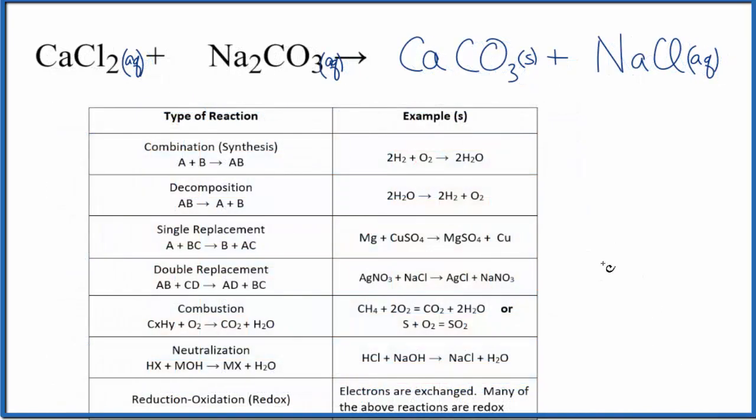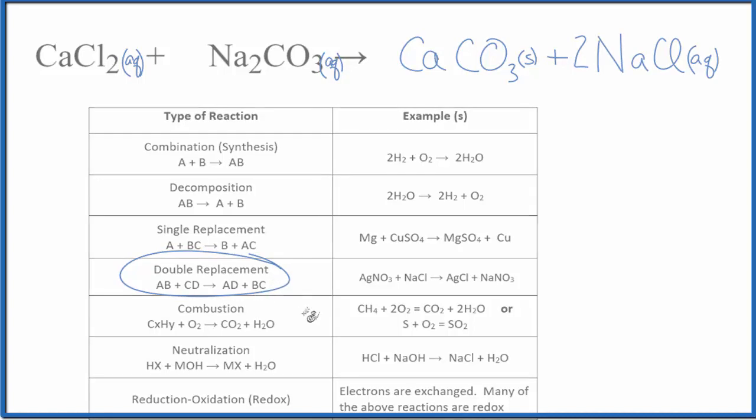One last thing - this equation isn't balanced. To balance it, if we put a 2 in front of the NaCl, that would balance the equation. So this is the type of reaction for CaCl2 plus Na2CO3. It's a double displacement reaction, also called a precipitation reaction. This is Dr. B, and thanks for watching.